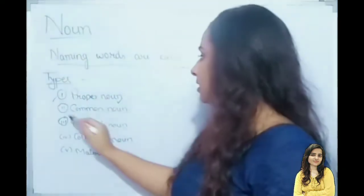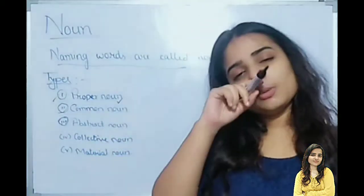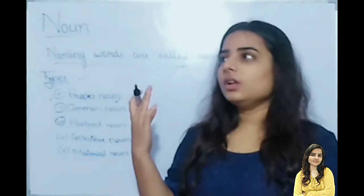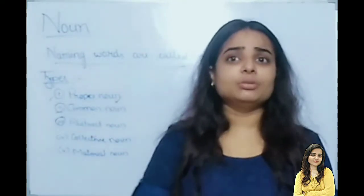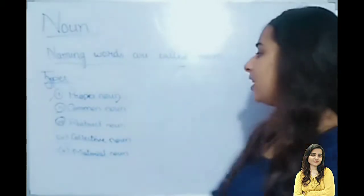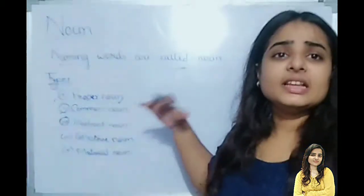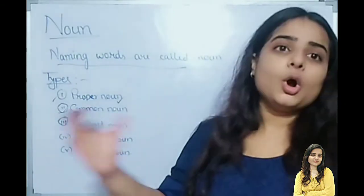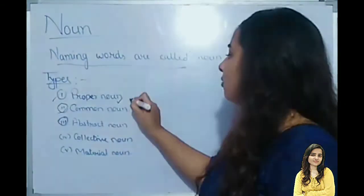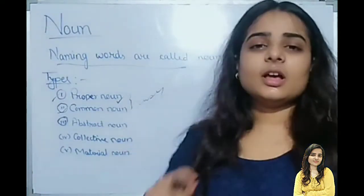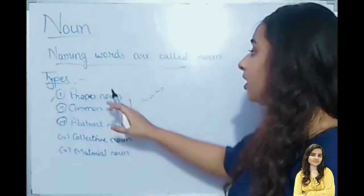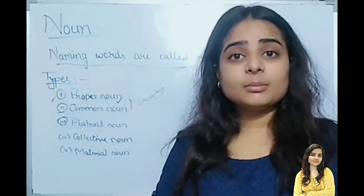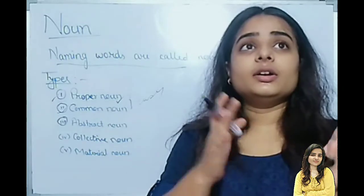Next: Common Noun. What are common nouns? Girl, river, class, chair, table, marker — these are all common nouns. Basically, names of things that are very common. I will explain the difference between these two so that you can very easily understand how to distinguish between a proper noun and a common noun. Distinguish means to see the difference between the two.